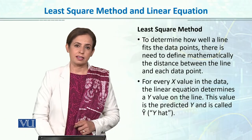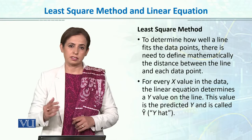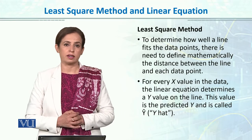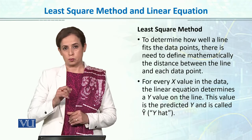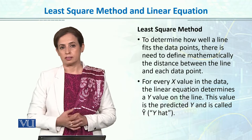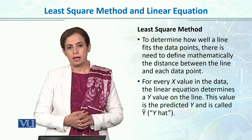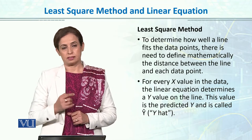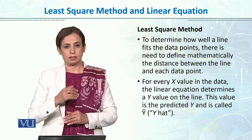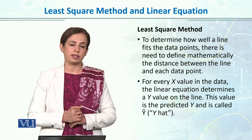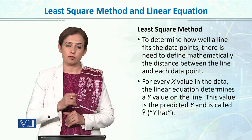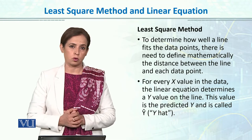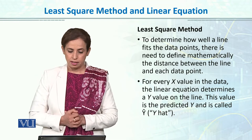We have talked about regression — basically, we draw a line of best fit to predict the y value from the given x value. Now, the method used statistically to draw this line of best fit is called the least square method.